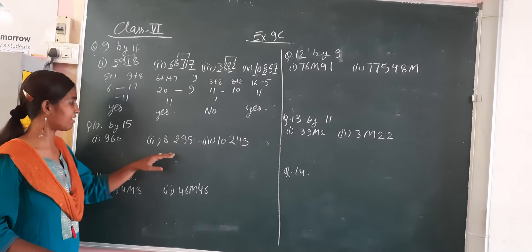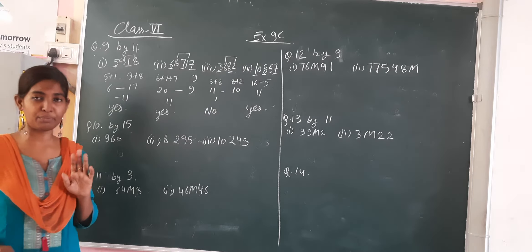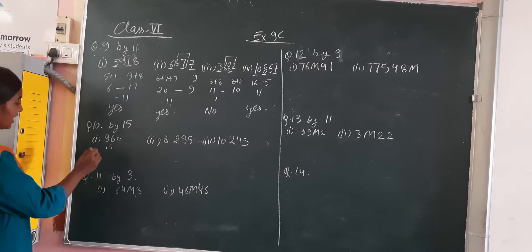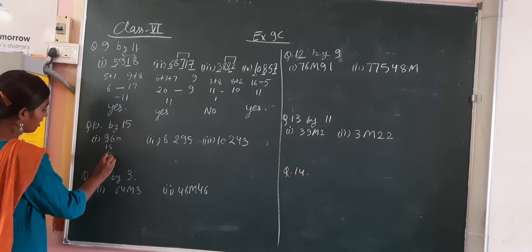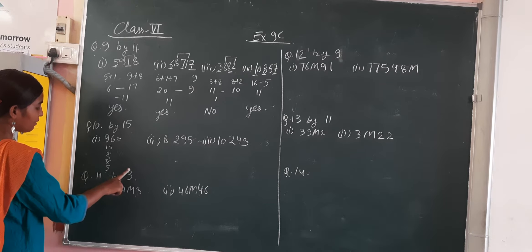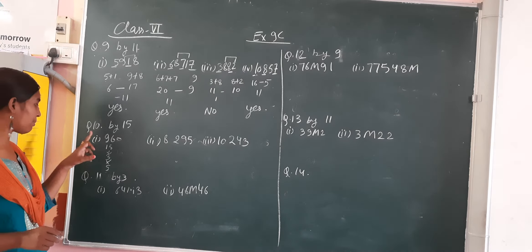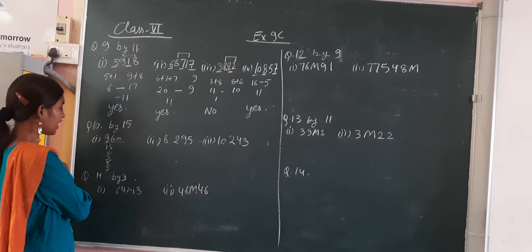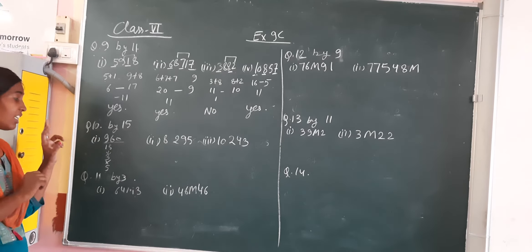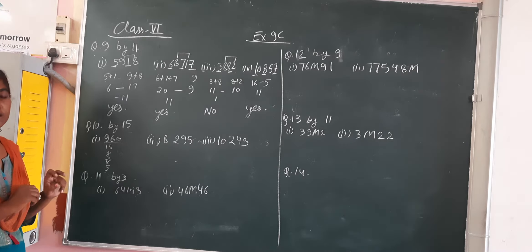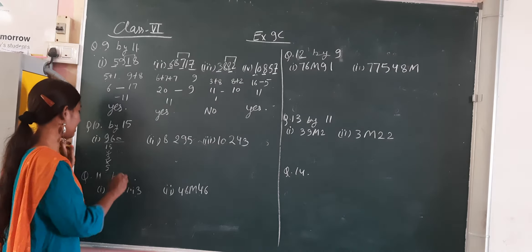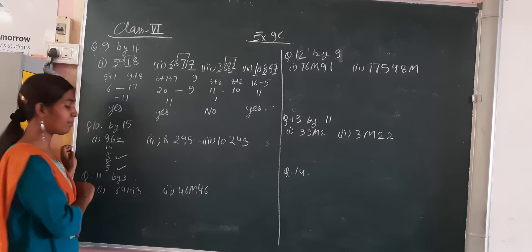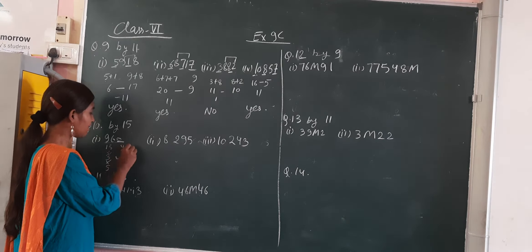Now we have to find out whether the numbers are divisible by 15 or not. There is no particular rule for 15, so we write 15 as 3 times 5. If a number is divisible by 3 as well as 5, then the whole number is also divisible by 15. Check whether this number is divisible by 3: digit sum — 9 plus 6 is 15, and again 1 plus 5 is 6. Yes, it is divisible by 3. Now check whether it is divisible by 5: last digit is 5 — yes, it is divisible by 5. So it is also divisible by 15.